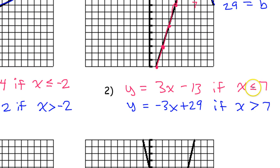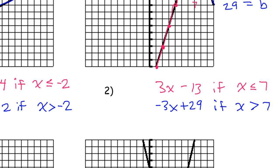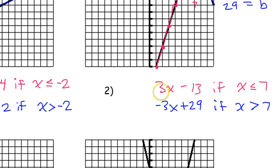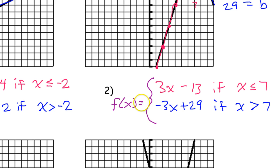Again, it doesn't matter which one you make or equal to and which one you just leave plain. Using proper piecewise notation with a brace and calling it f of x — that's number 2.